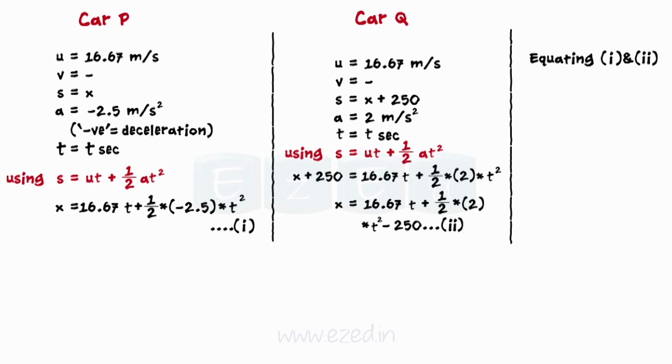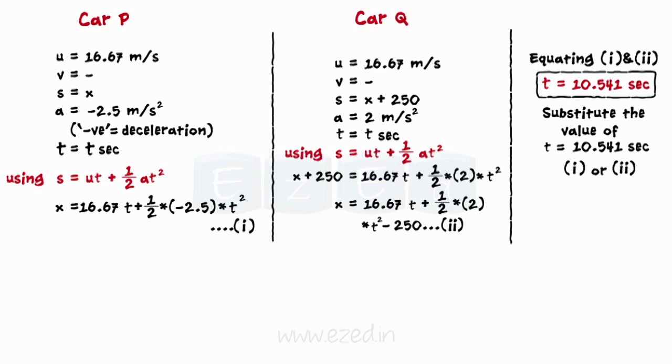On solving equation 1 and 2, we get the value of time. On substituting the value of time in either of the equations, we get the point at which car Q will overtake car P.